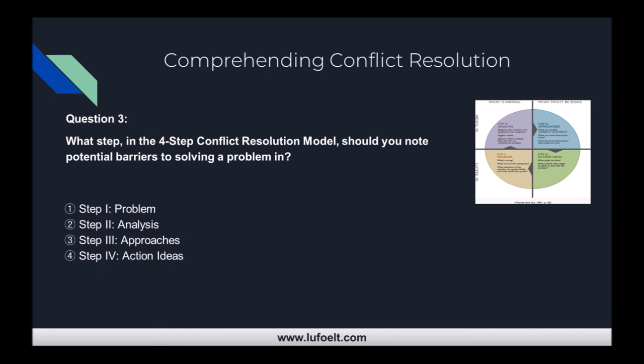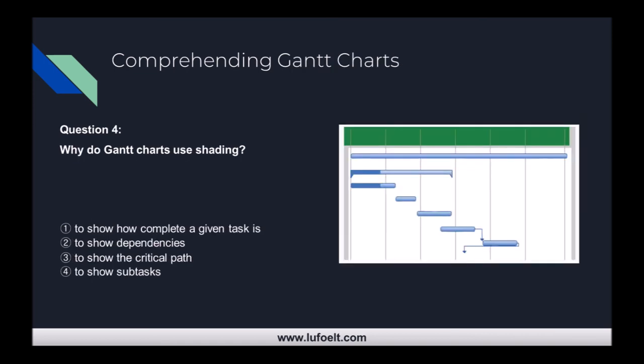This is very common in many companies — the idea of setting the goal super high so that if employees achieve at least half or 75% you're satisfied. But it's not motivating; it makes employees detached and unhappy because they can never win. Question three: in which step of the four-step conflict resolution model should you note potential barriers to solving the problem? Step one, step two analysis, step three approaches, or step four action ideas?